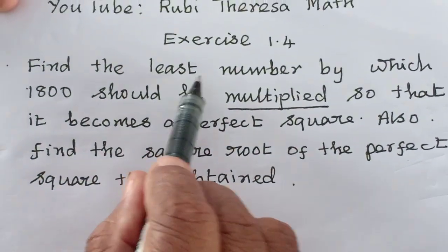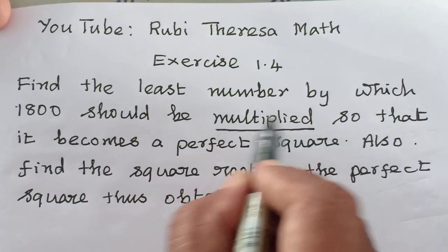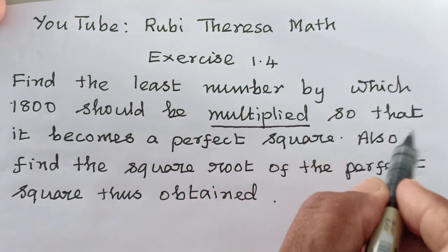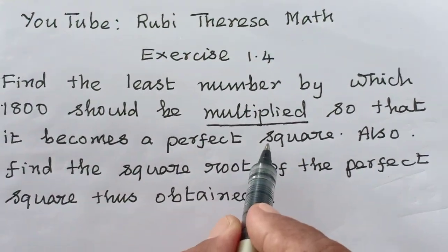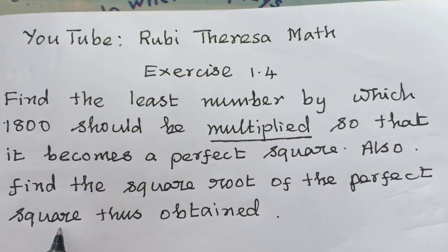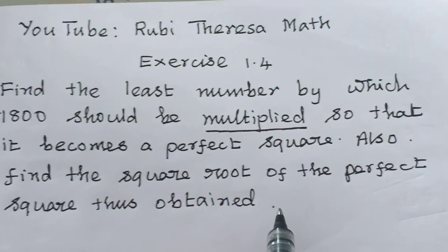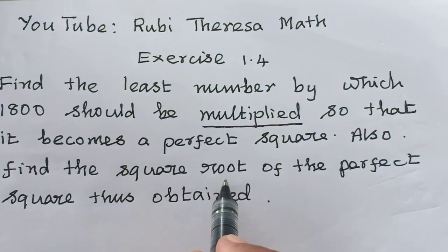Also find the square root of the perfect square thus obtained. So you have to find the least number by which 1800 should be multiplied so that it becomes a perfect square. Also find the square root of the perfect square number. After multiplying you will get the perfect square number. For that number you have to find out the square root.